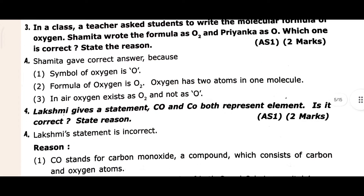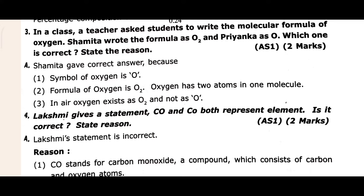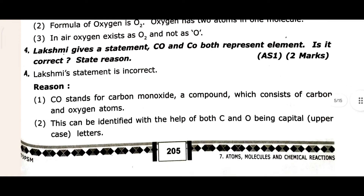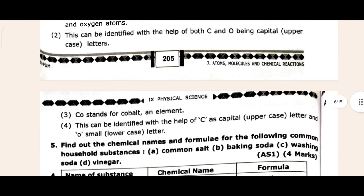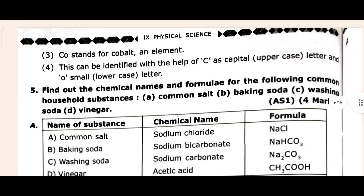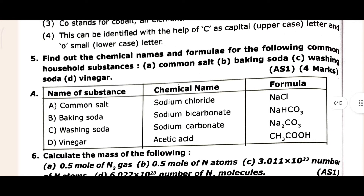Come to the third question - this is your third question and answer. Then come to the fourth question and answer. Co stands for cobalt, and an element can be identified with the help of its symbol - capital uppercase is the first letter and small lowercase is the second letter. After that, this is your fifth question and answer.